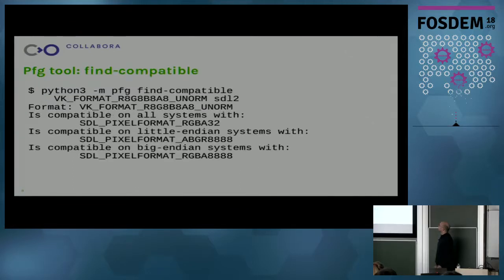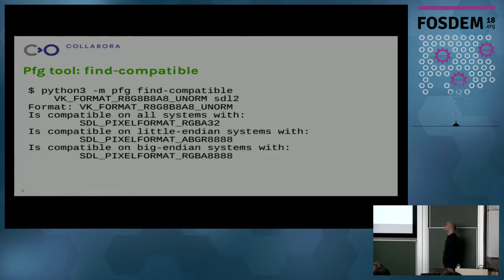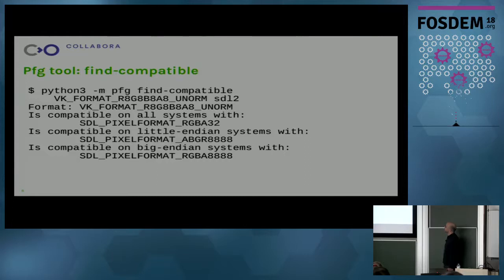The next interesting operation, and perhaps even more interesting, is find-compatible. The find-compatible operation allows us to ask the tool to give us all the pixel formats from a particular family that match another format. In this case, we're asking the tool to return all pixel formats from the SDL2 family that are compatible with a particular Vulkan format. The tool replies that this format is compatible on all systems with one SDL pixel format, compatible on little-endian systems with another, and compatible on big-endian systems with yet another.